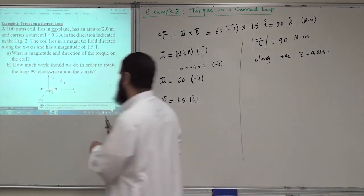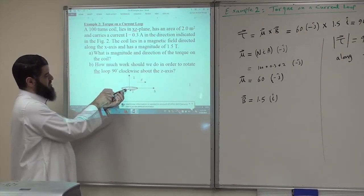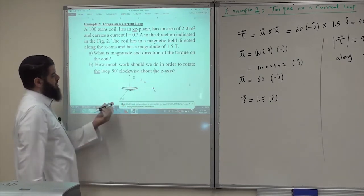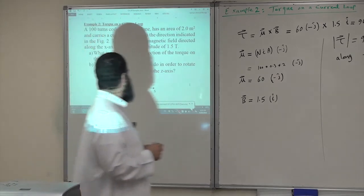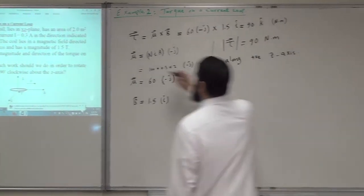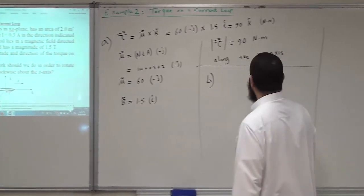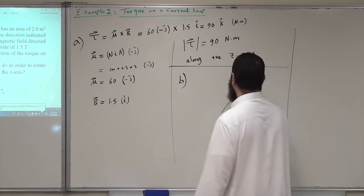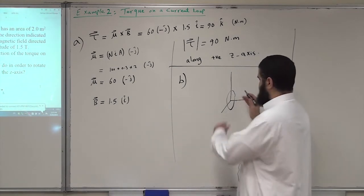Part b: How much work should we do to rotate the loop 90 degrees clockwise about the z-axis? The z-axis is vertical, and the loop is initially in the x-z plane. After rotating 90° clockwise, the loop will be in the y-z plane.